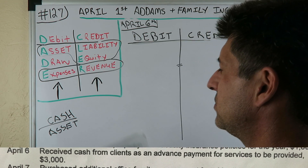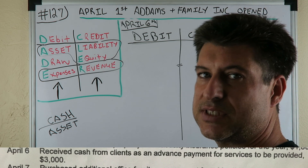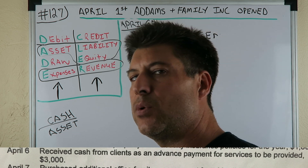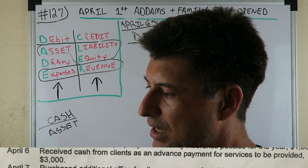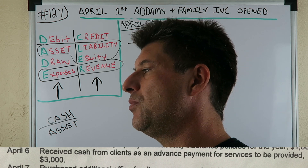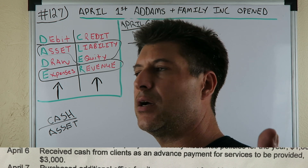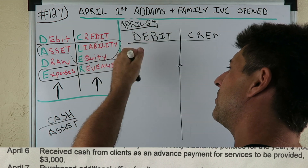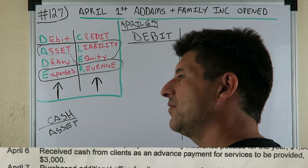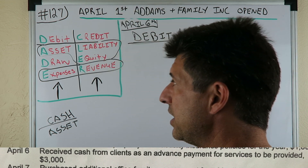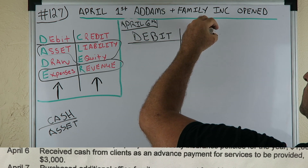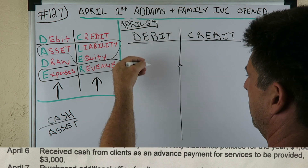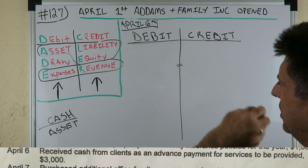Cash is an asset. We wrote that down because so many of our journal entries have cash in them. As you make a journal entry and learn what more things are — like prepaids in our last couple of examples — you would know that prepaids are an asset. When you come across different categories, write them down so you can remember. This is where we're going to do our journal entry — we got debit, we got credit — to remind us that they're going to equal.